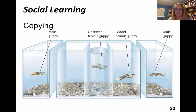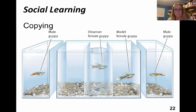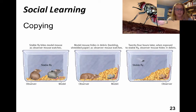In the guppy example, the observers chose which male the female guppy would be next to. And finally, we saw an example in mice in the lab of the same thing. With that, we can go ahead and move forward.